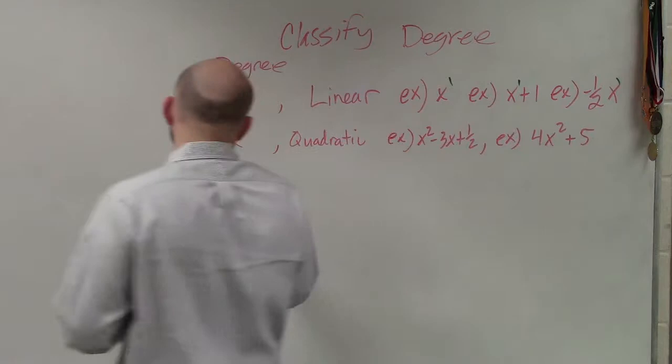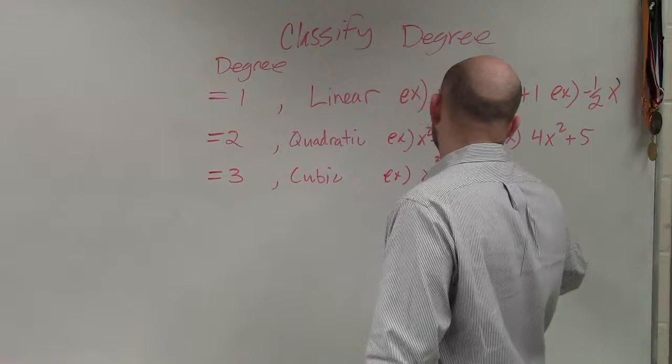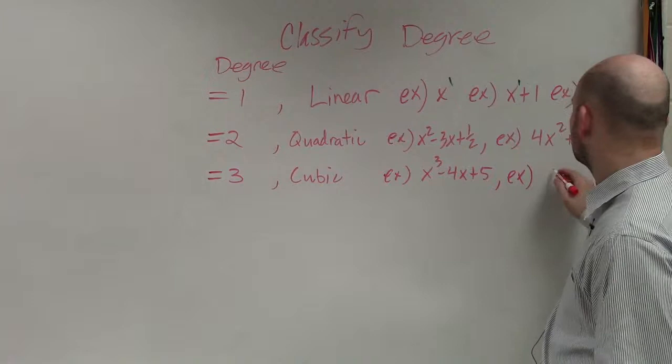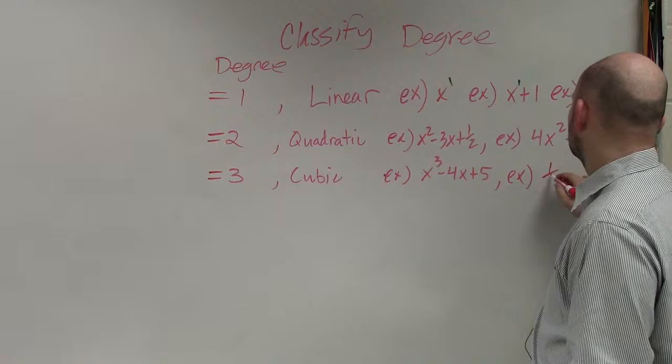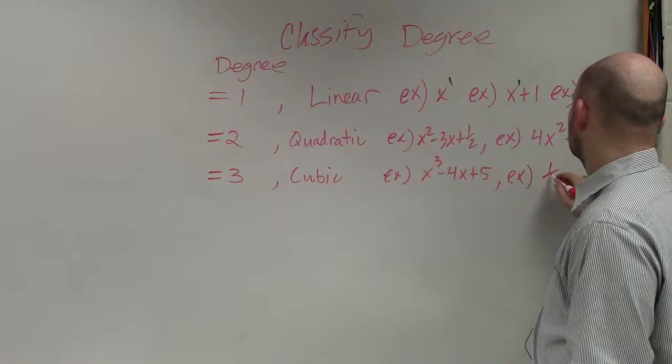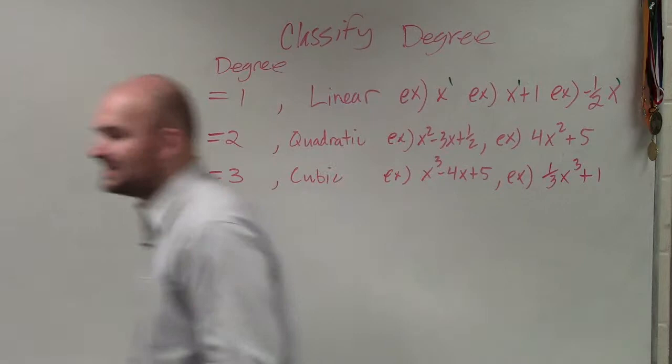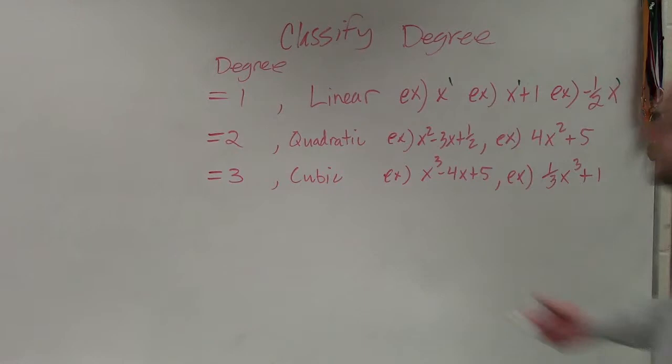If your degree is equal to 3, it's what we call cubic polynomial. So again, in this example, you guys can see that the degrees of each of these, the largest degree of all of my monomials is equal to 3.